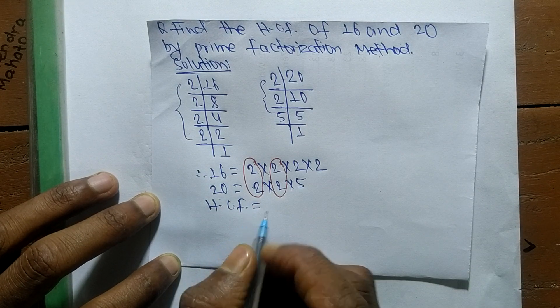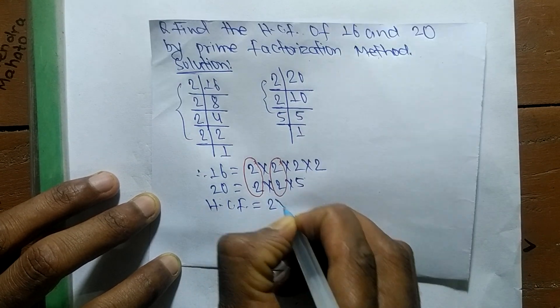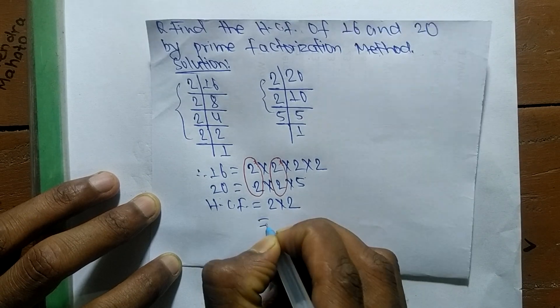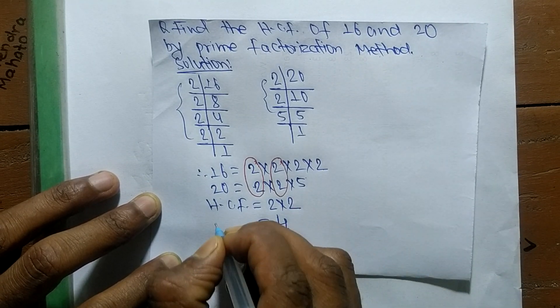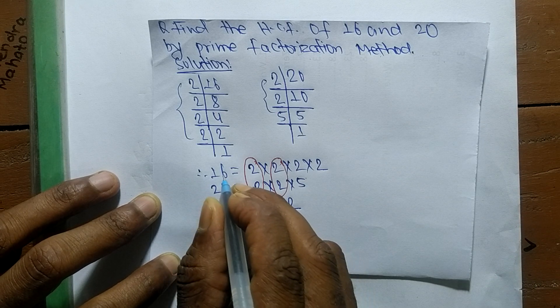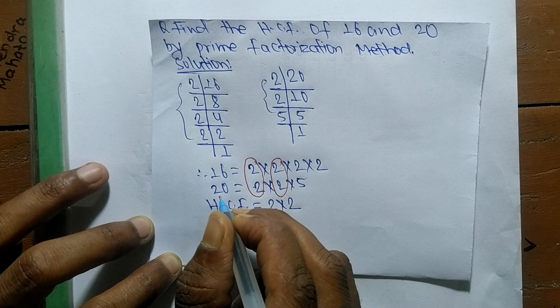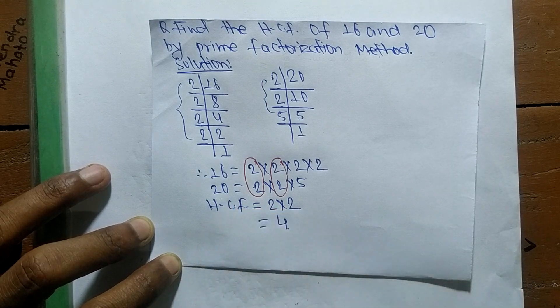So the common factors here are 2 and 2, and their product is 4. Therefore, 4 is the highest common factor of 16 and 20. That's all for today, and thanks for watching.